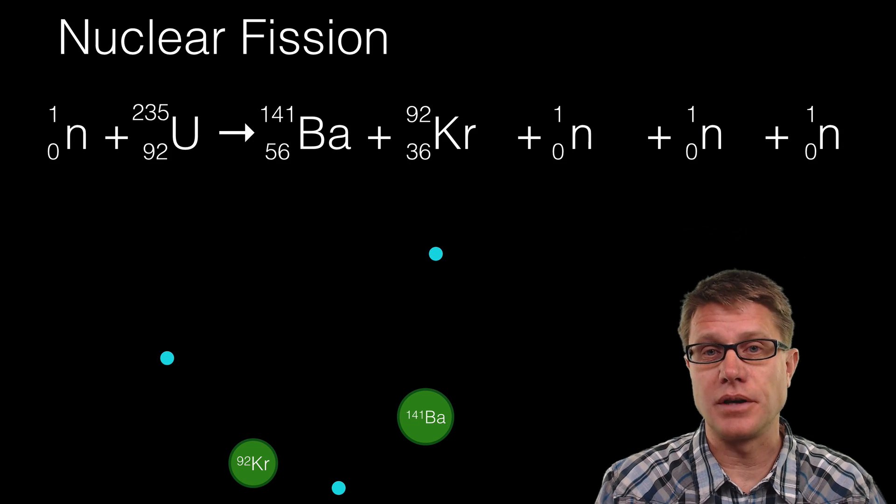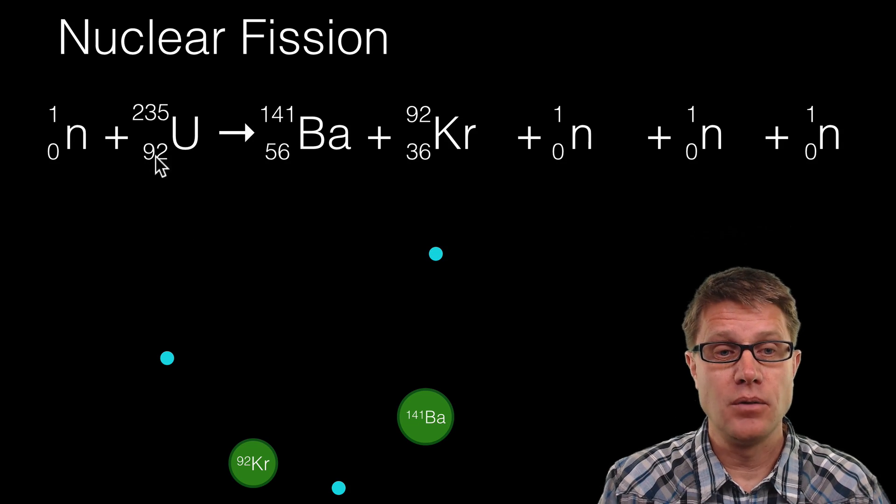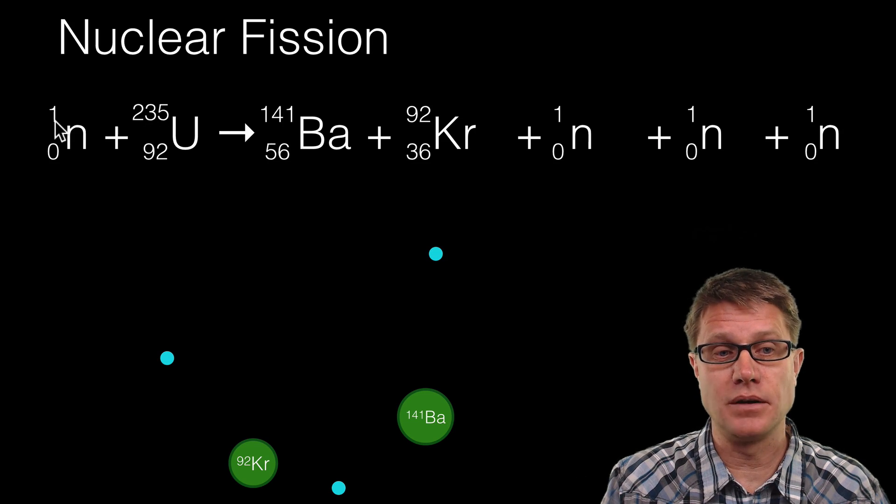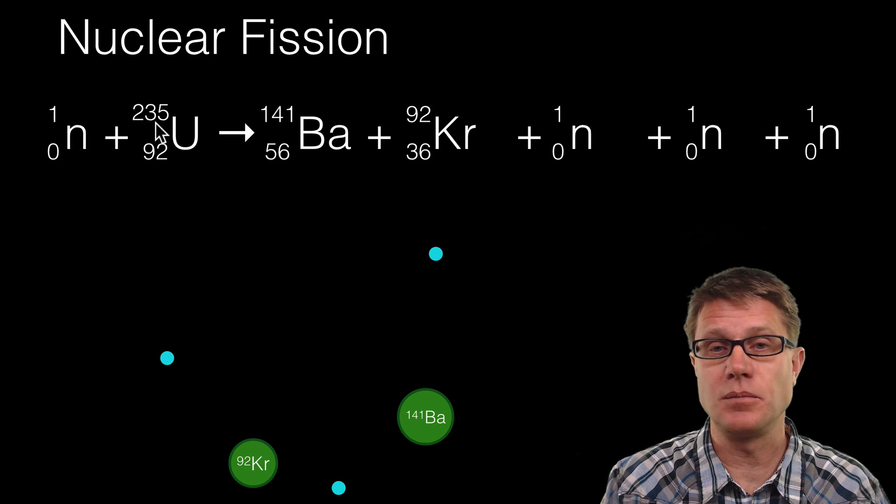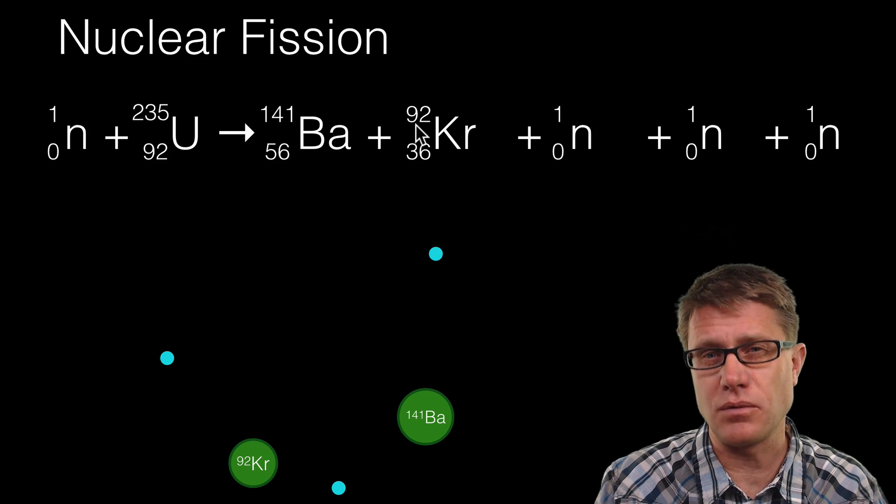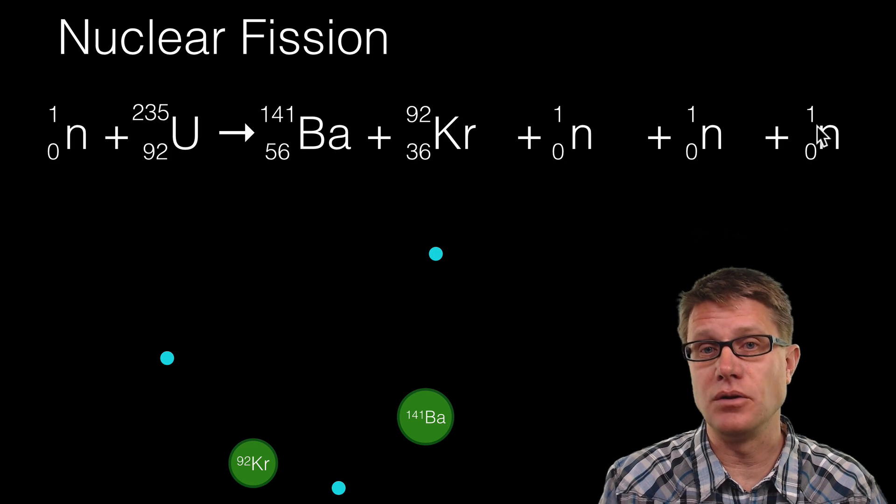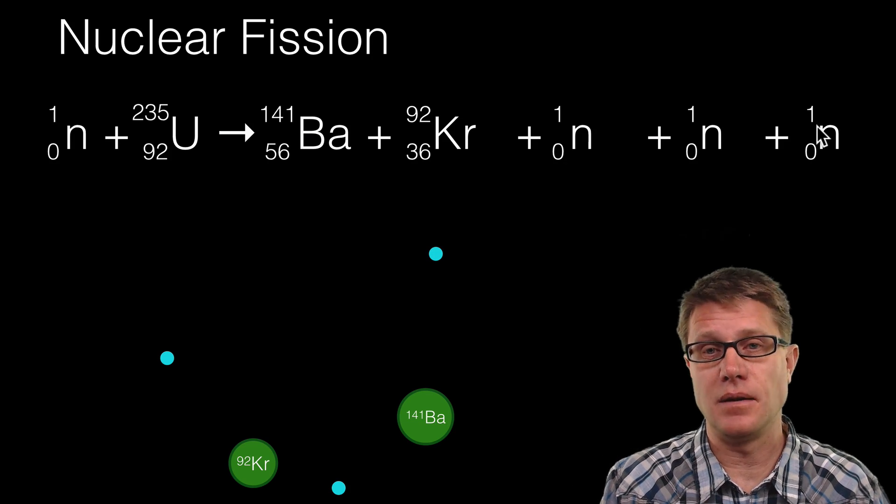And so let's start with nucleon number. How many nucleons did we have before the reaction? Well we had 235 in the uranium plus the one neutron. So we had 236 to begin with. How many do we have when we are done? 141 plus 92. So that is going to be 233 plus 1, 2, 3 neutrons. So it is conserved. The nucleon number before and after is exactly the same.